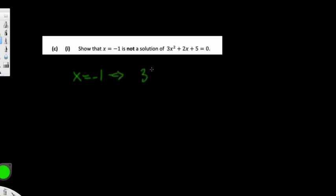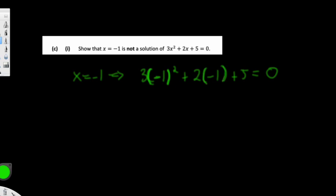The next question: show that x = -1 is not a solution. All we have to do is substitute it in. So 3(-1)² + 2(-1) + 5 = 3(1) - 2 + 5 = 3 - 2 + 5 = 6, which is not equal to 0. Therefore x = -1 is not a solution of this quadratic equation.